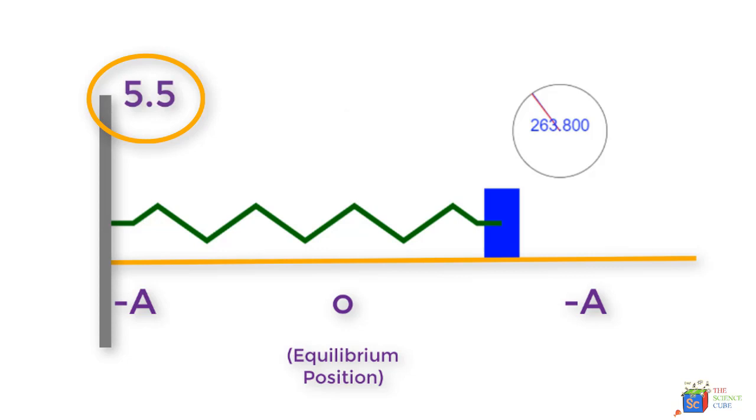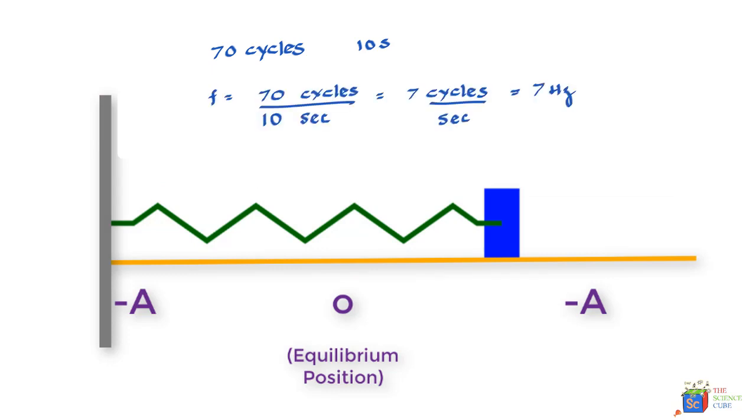So the frequency of this vibration is 5.5 hertz, where hertz is a unit of frequency. If you were told that this mass is doing 70 cycles in 10 seconds, we can calculate the frequency by saying, well, if in 10 seconds 70 cycles are completed, how many cycles are done in one second?